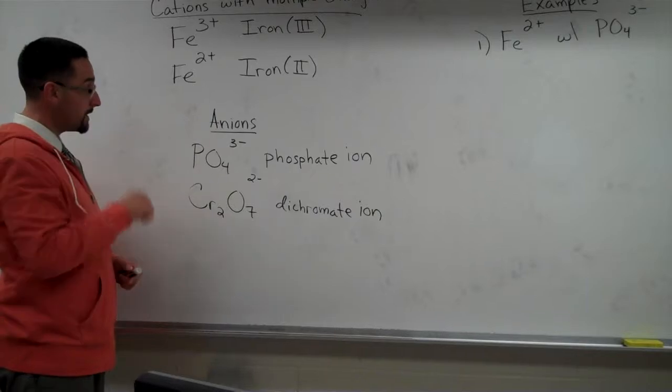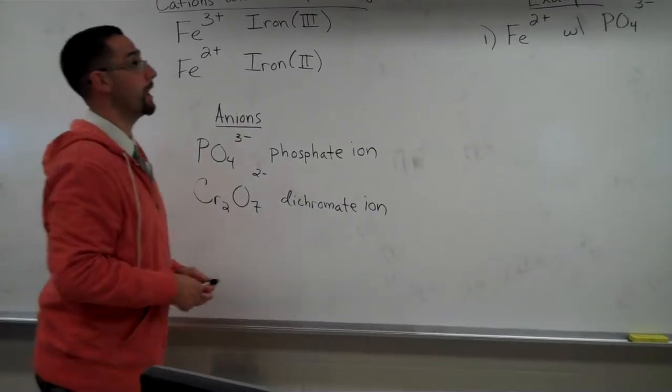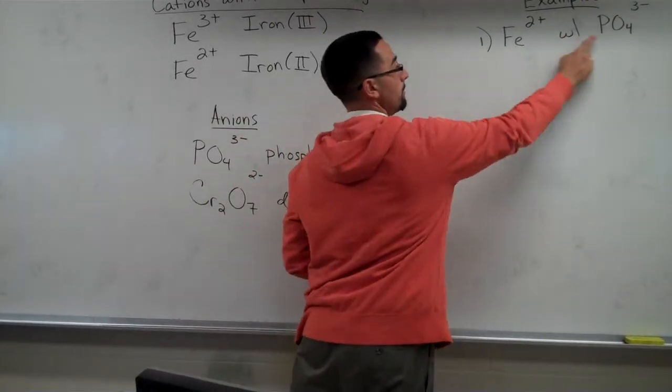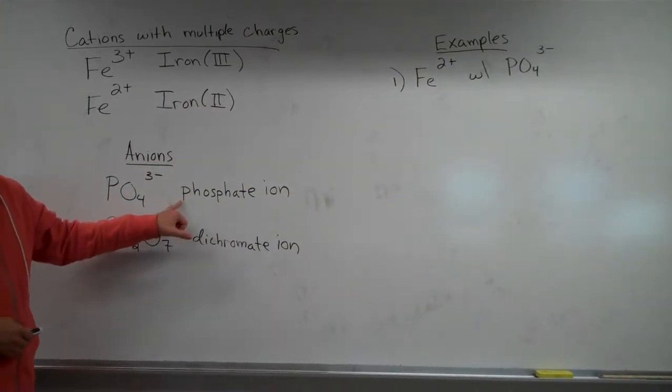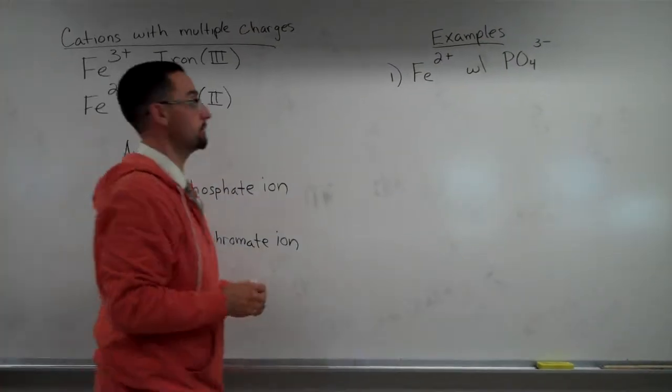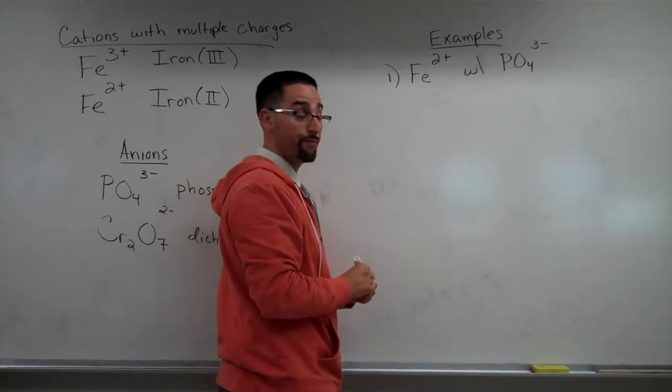What we're going to do today is show an example of when iron 2 bonds with the phosphate polyatomic ion, PO4 3-. So what we're going to do here is the cation is always written first.